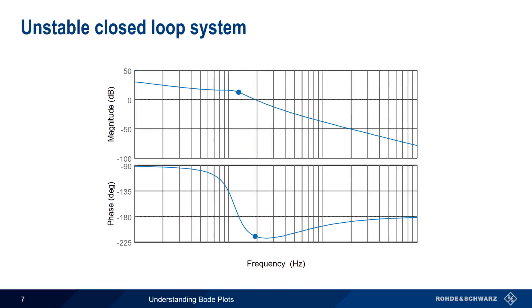In our next example, the measured gain when the phase is minus 180 degrees is plus 13 dB, so the gain margin here is minus 13 dB. At a gain of 0 dB, the measured phase is minus 215 degrees, so phase margin is minus 35 degrees at the gain crossover point, and this system is unstable.